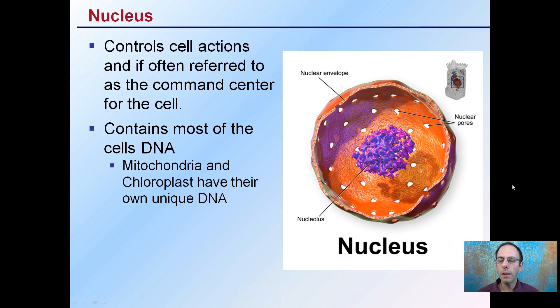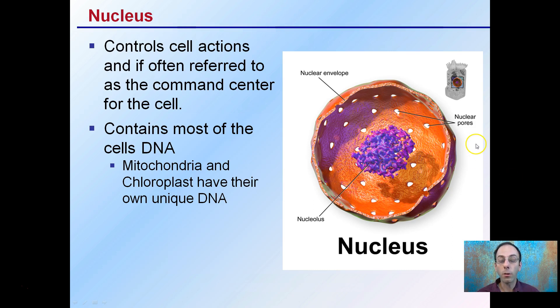They contain a nucleus, which controls the cell's actions. It's often referred to as the command center of the cell. It contains most of the DNA, even though the mitochondria and chloroplasts do have some of their own unique DNA — the nucleus holds the vast majority.